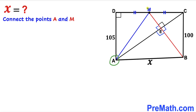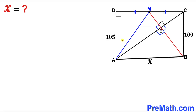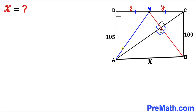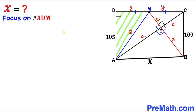We connect points A and M to get right triangle ADM. Since M is the midpoint, DM equals MC, so we call each of them Y units. We call side AM as Z. We label segment AE as lowercase a, segment EC as lowercase b, segment ME as lowercase c, and segment EB as lowercase d.